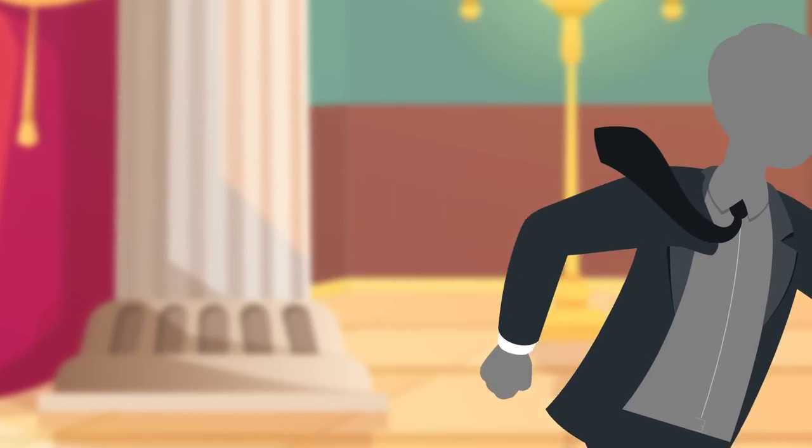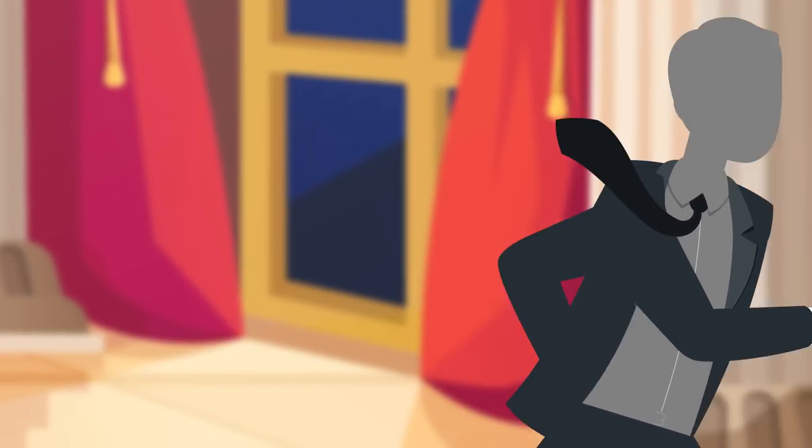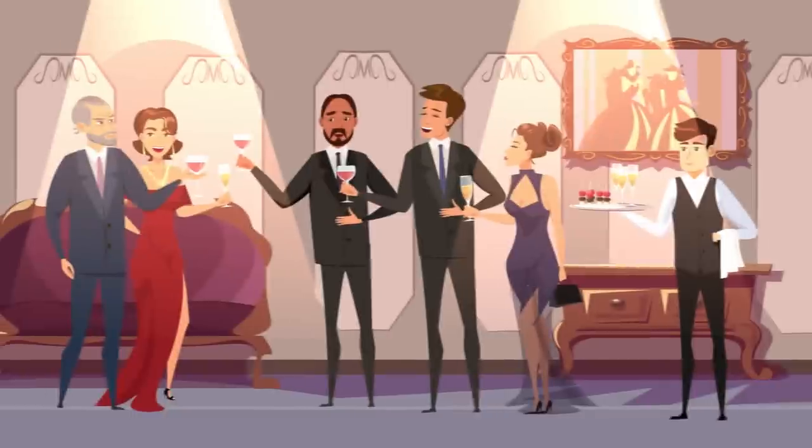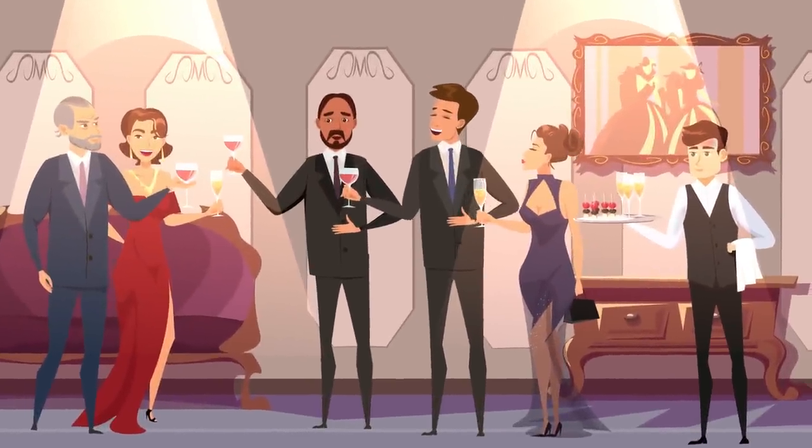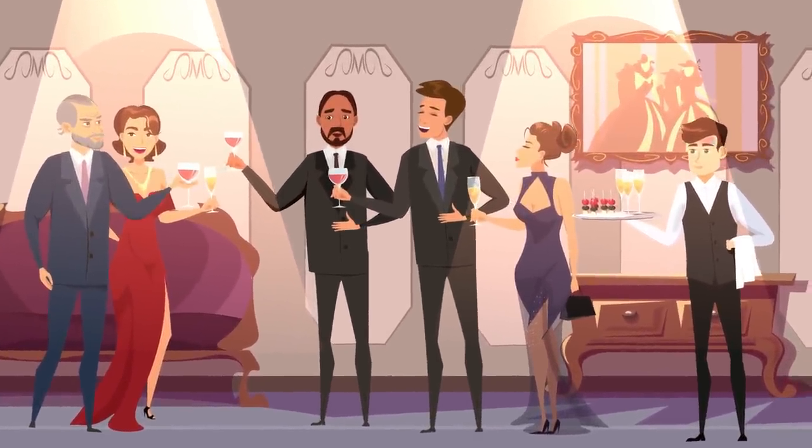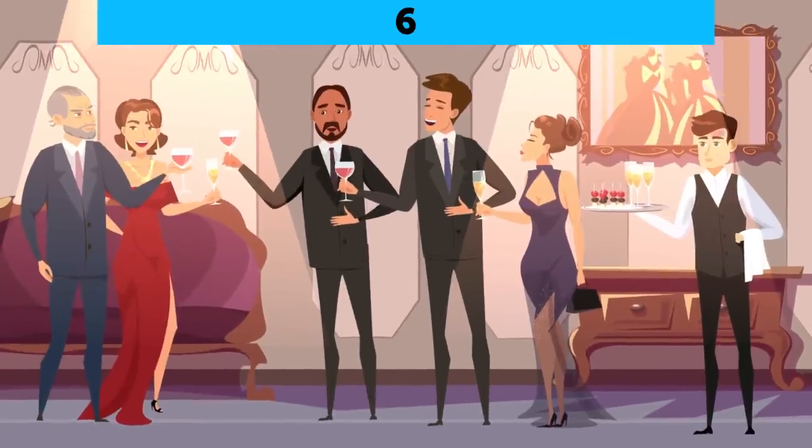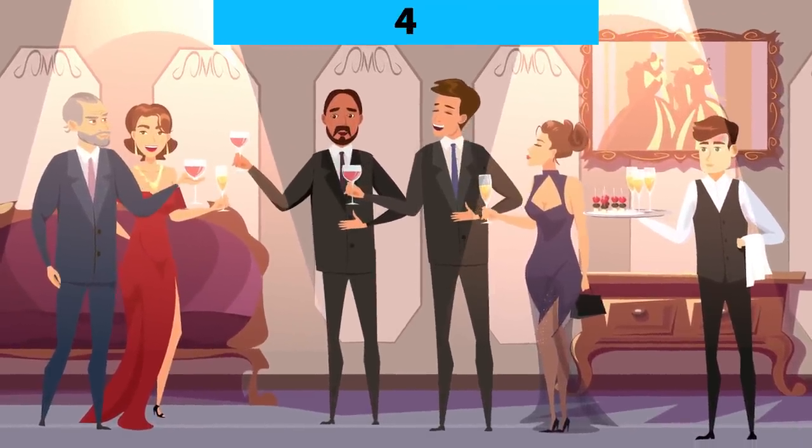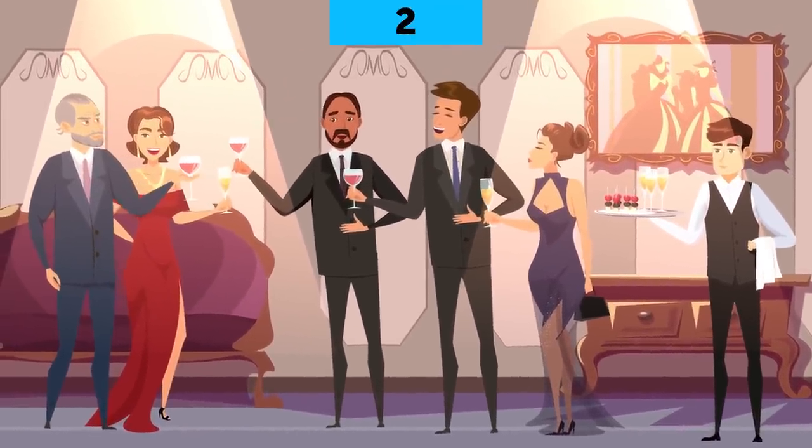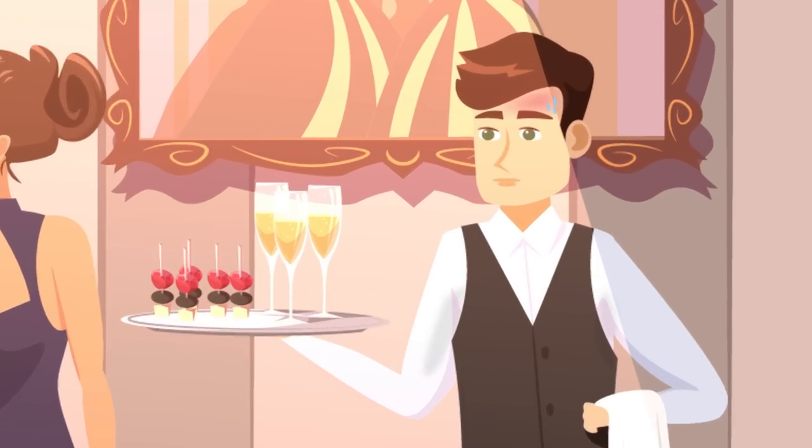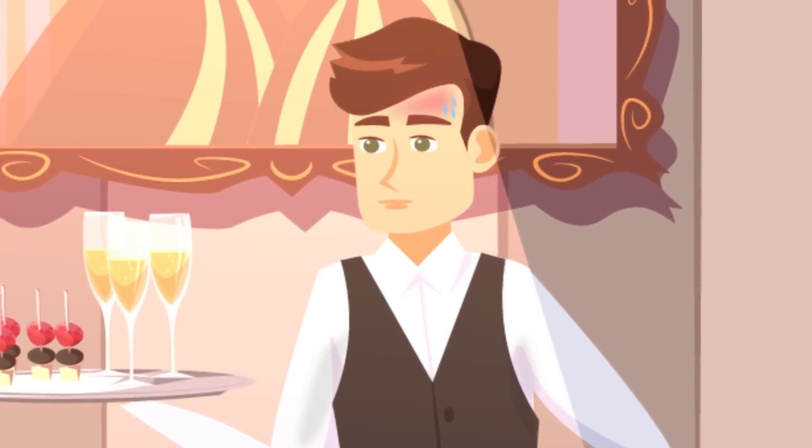Detective Anderson is chasing a robber dressed in a tuxedo. Suddenly, the criminal runs inside a huge hall. All people there are formally dressed. Help Detective Anderson find the suspect among them. Catch that guy. He's sweating because he's been running.